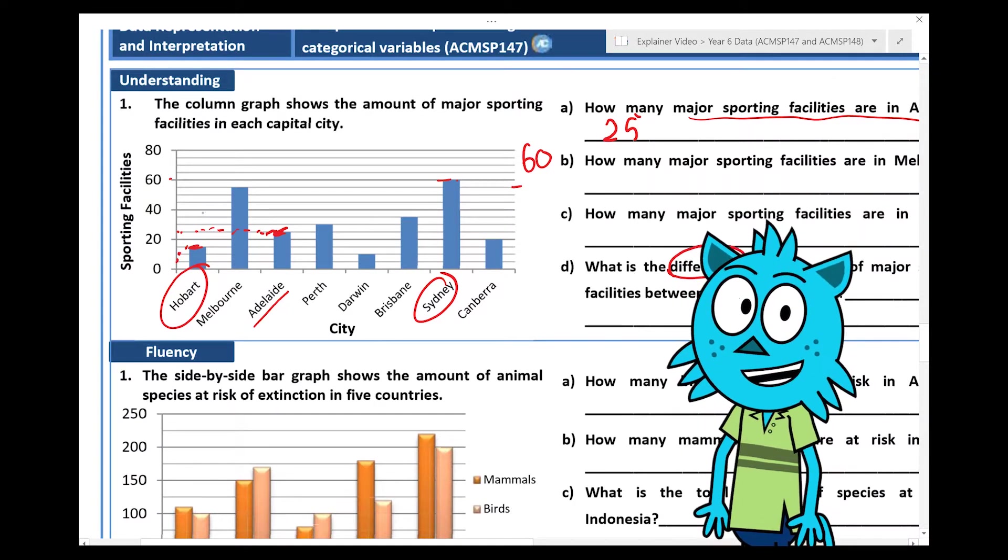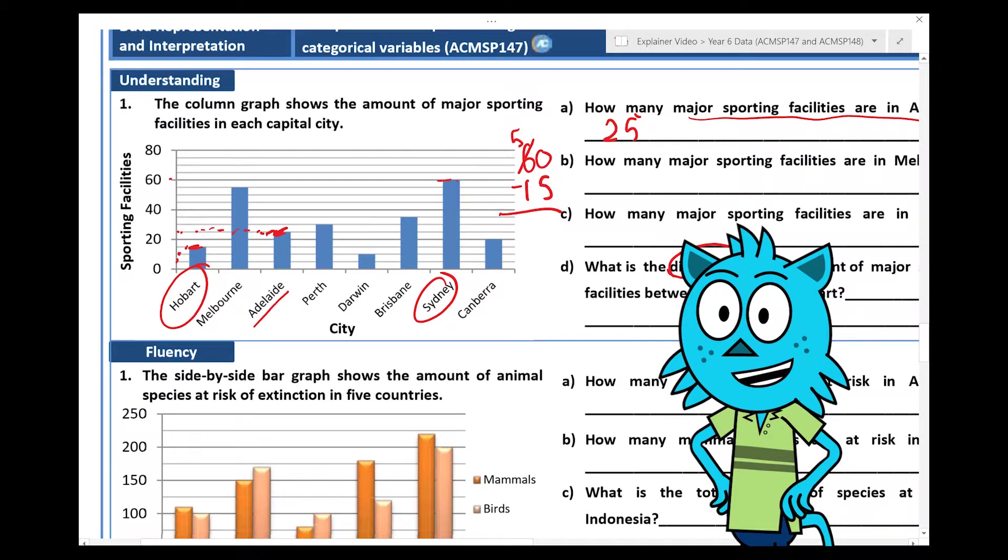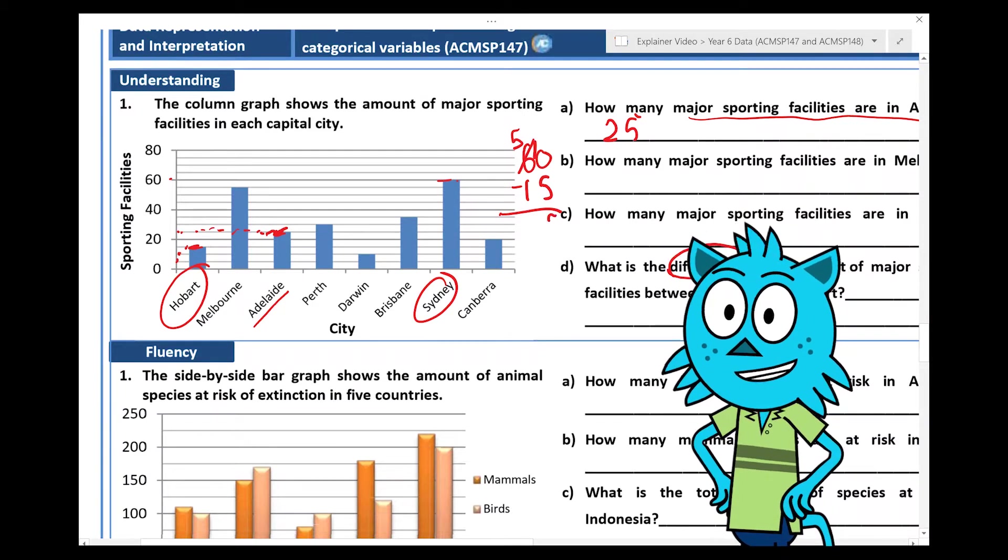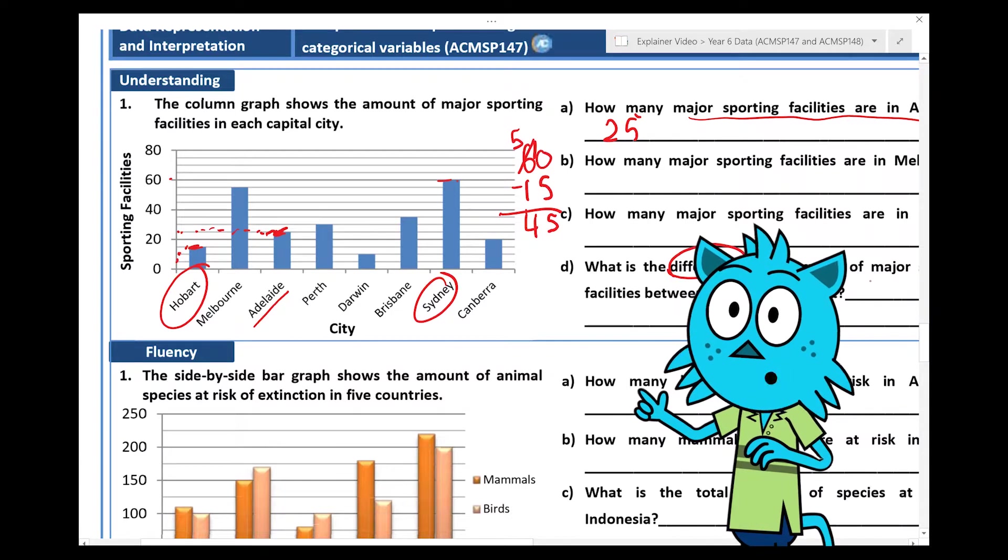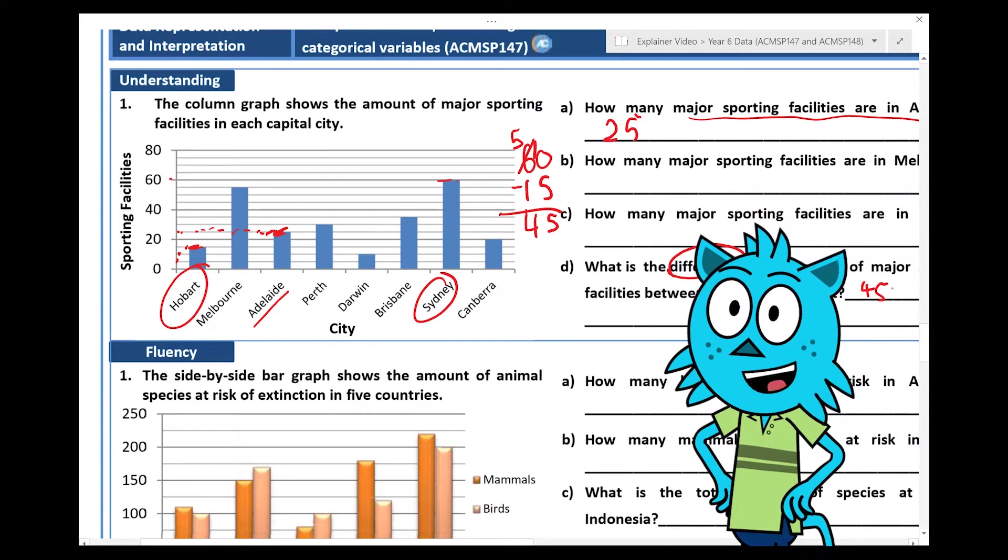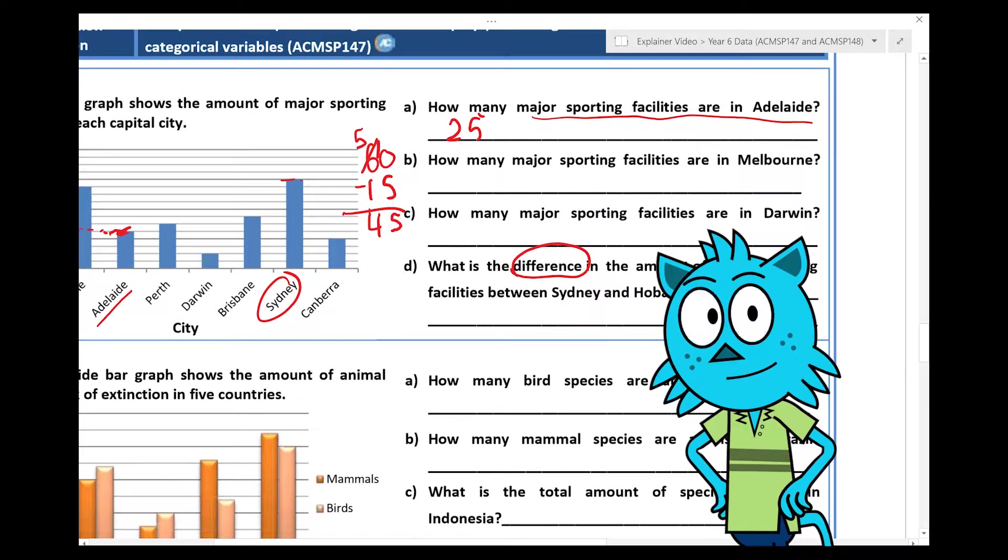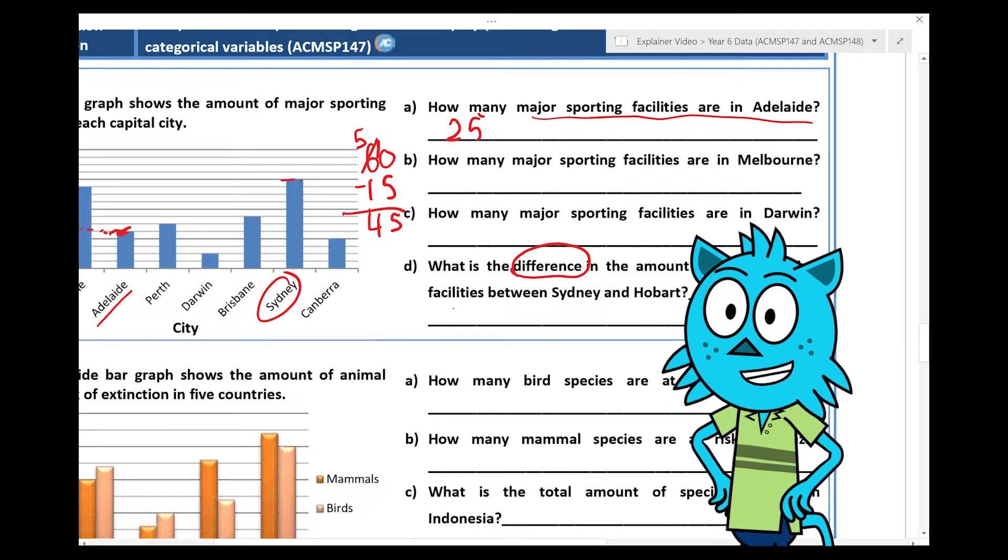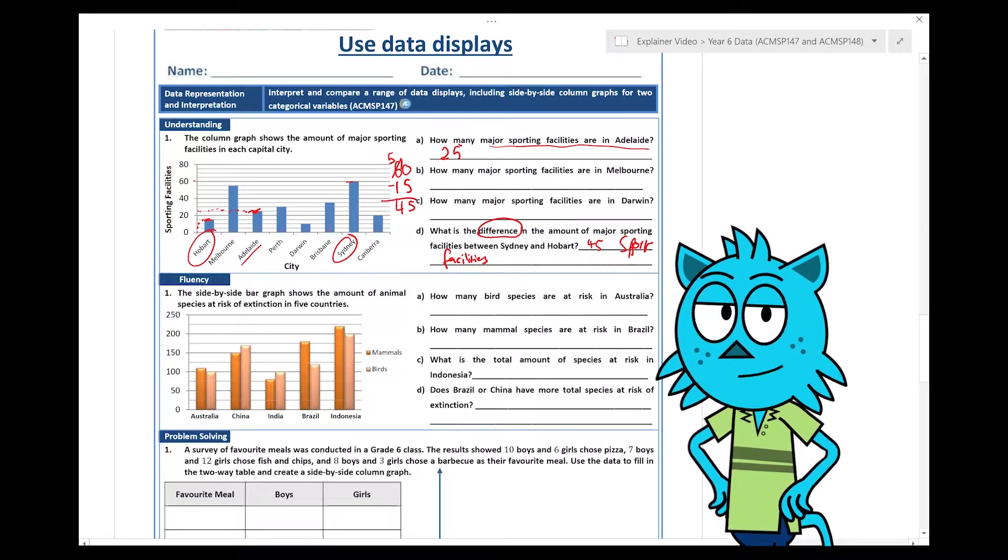So 60, take away 15. So here I'm going to have to regroup because 0, take away 5 I can't do. Cross out my 6, turn it to a 5. That brings over one of those 10s to my 1s column. And you do 10, take away 5 is 5. 5, take away 1 is 4. The answer is 45. So I'd say the difference is 45 sport facilities. It's always important to write it as a full sentence in maths. Sorry for the messy handwriting.